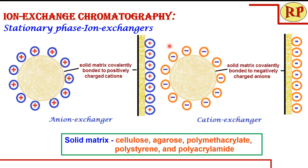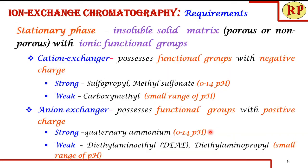Both cation exchangers and anion exchangers are available as strong or weak variants. This depends on the functional group attached to the solid matrix. Strong exchangers operate across the whole pH range, while weak exchangers only function within a limited pH range.